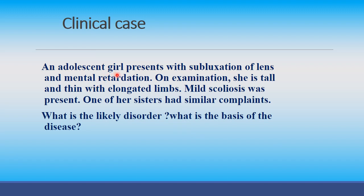Clinical case: An adolescent girl presents with subluxation of lens (ectopia lentis) and mental retardation. On examination she is tall and thin with elongated limbs and mild scoliosis. One of her sisters had similar complaints. The likely disorder is homocystinuria.